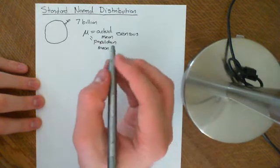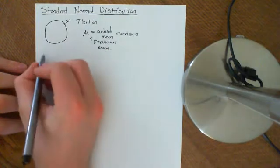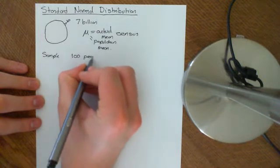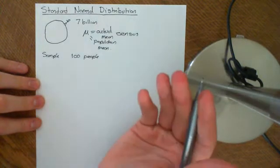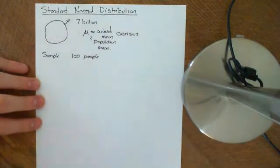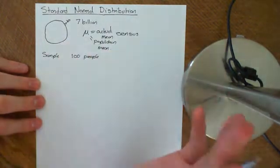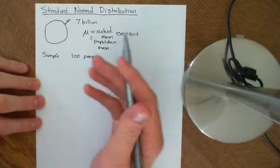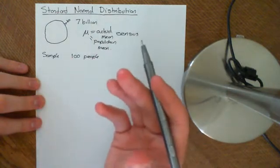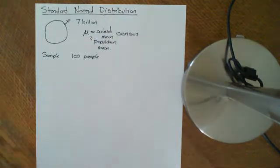Instead, what you're going to do is you're going to take a sample. So you'll take a sample. So you might take, let's say, 100 people. You'll take a random sample. You won't go to, you know, a rugby club and take the rugby players, who are all going to be massive. You'll take a random sample so that you get a hopefully representative, you get hopefully a decent representation of the whole population.